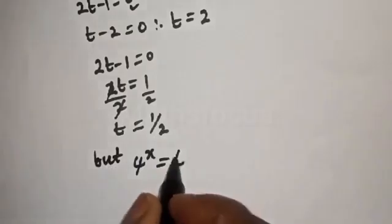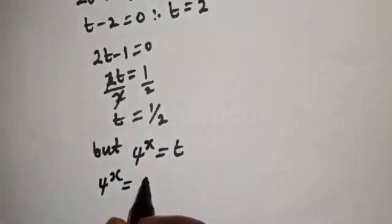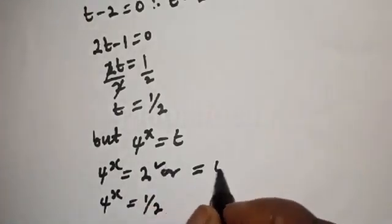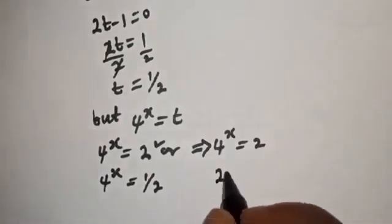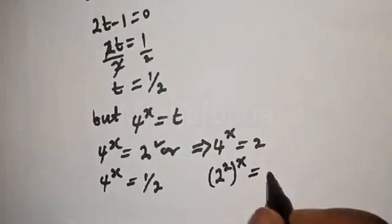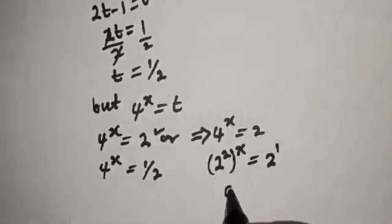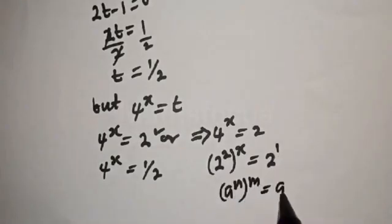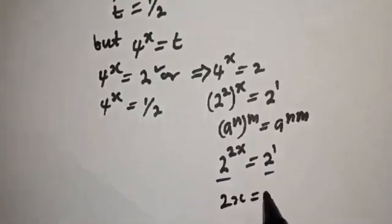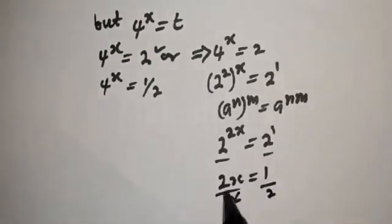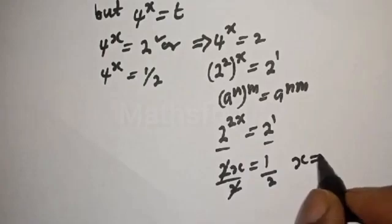Working with t equals 2: since t = 4 raised to power x, we have 4 raised to power x equals 2. Writing 4 as 2 squared: 2 raised to power 2x equals 2 raised to power 1. Since the bases are the same, 2x equals 1, so dividing both sides by 2: x is equal to 1 over 2.